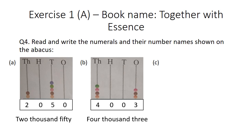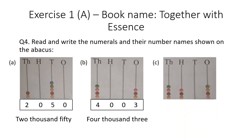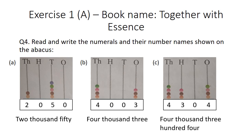Part C: at the ones place there are 4 beads. The number formed is 4304, and its number name is four thousand three hundred and four.